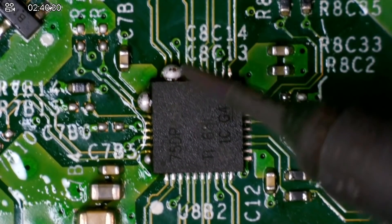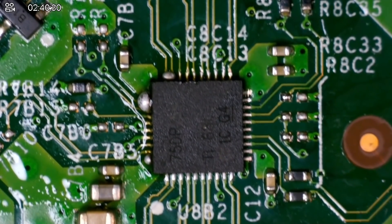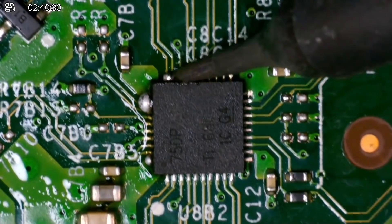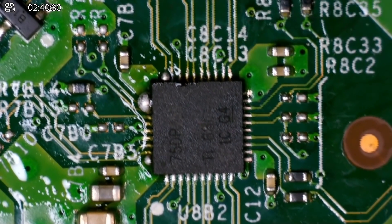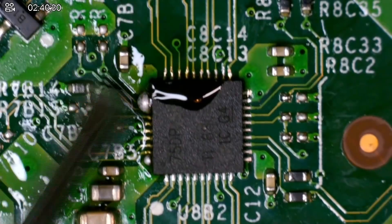Now we're just going to use the iron to get rid of these solder blobs here. A little bit more flux to help it out. There we go. Same this side.